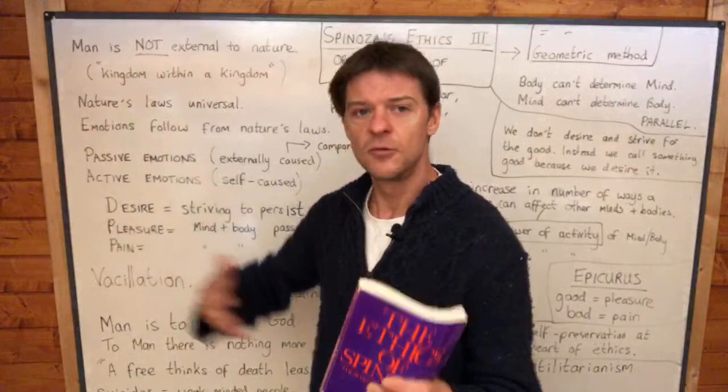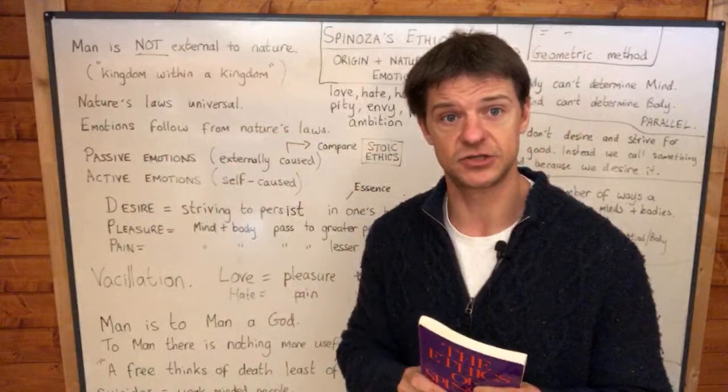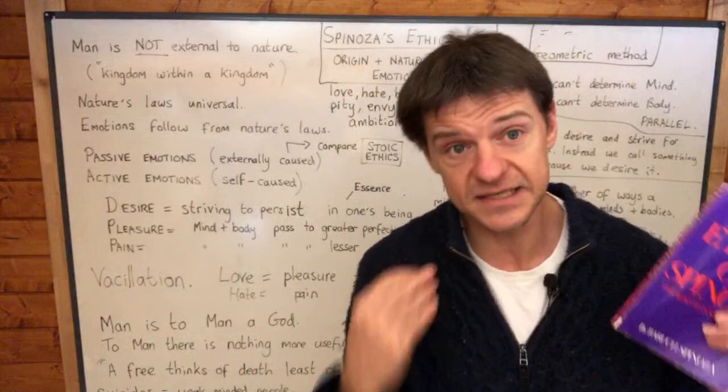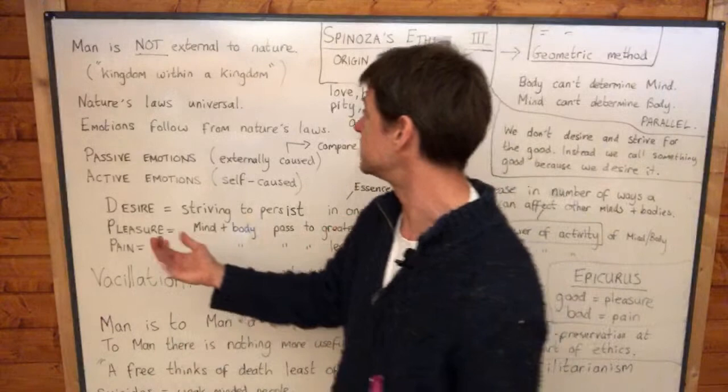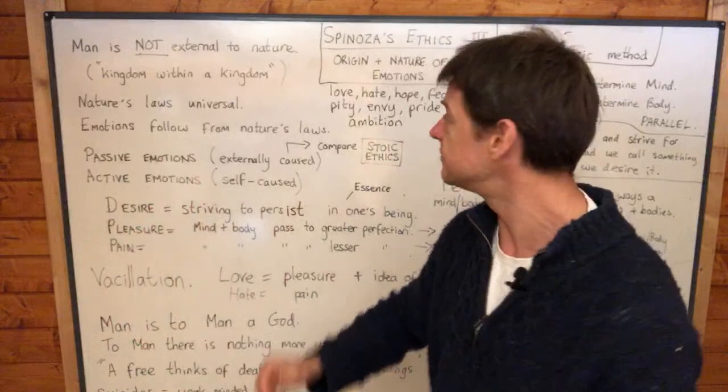Remember that for Spinoza, one of his main criticisms of the way people understand man is that he believes many people put man outside of nature, as if man was something special, something different from everything else — as if man were a kingdom within a kingdom, as he describes it. He doesn't think that man is a kingdom within a kingdom. He thinks that man is a part of nature, not external to nature. And this is precisely why he uses the geometric method — bodies can be described geometrically, and so man ought to be described geometrically, because he's part of the same thing.